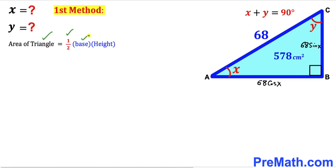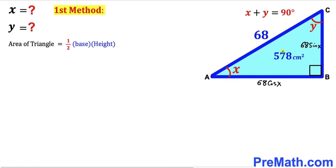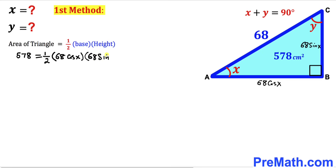Now let's recall the area of a triangle formula: area equals one-half times base times height. In our case the base is 68·cos(x) and the height is 68·sin(x), and the area is 578. Substituting into the formula: 578 = ½ × 68·cos(x) × 68·sin(x). Simplifying, one-half times 68 gives 34, and we rewrite the other 68 as 2 times 34.